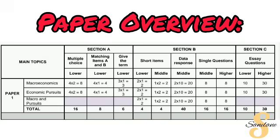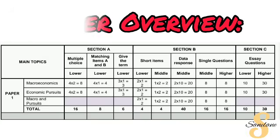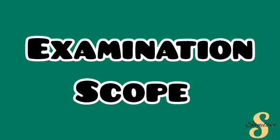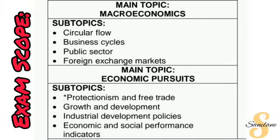The last section is Section C, where your essay is divided into two parts: the main part worth 30 marks and the additional part worth 10 marks. Remember, here you will choose only one main topic. As far as Section A is concerned, both macroeconomics and economic pursuits are compulsory — you do not get to choose. You have to answer all the questions in Section A regardless of whether they come from macroeconomics or economic pursuits. In Sections B and C, that's where you get to choose.